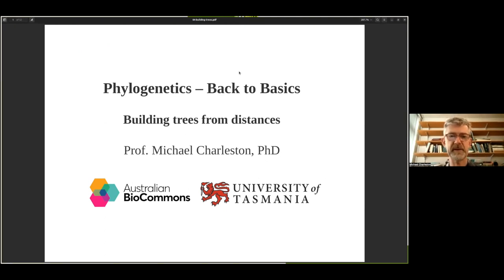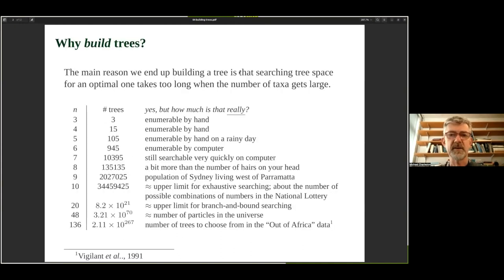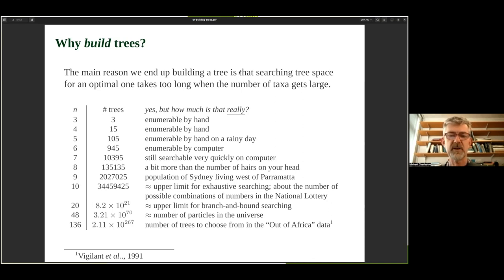Welcome back to Phylogenetics Back to Basics. We're going to talk about building trees based on distance data. You might be wondering why build trees — the main reason is that the number of possible trees gets so large so fast that we can't check them all, we can't search them all. Here are some comparable numbers for some relatively modest numbers of taxa — that's the number of species — showing the very rapid growth in the number of possible trees.